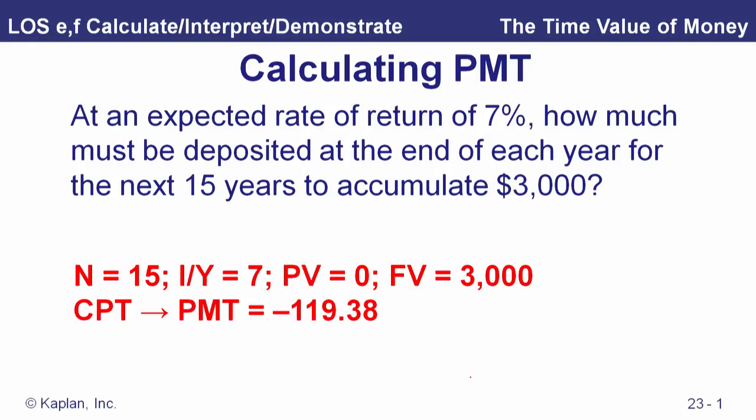We calculate the payment and get a negative value, because to achieve a future value of $3,000, we have to pay in $119.38 at the end of each year for the next 15 years. We solve for payment, and this is in end mode.